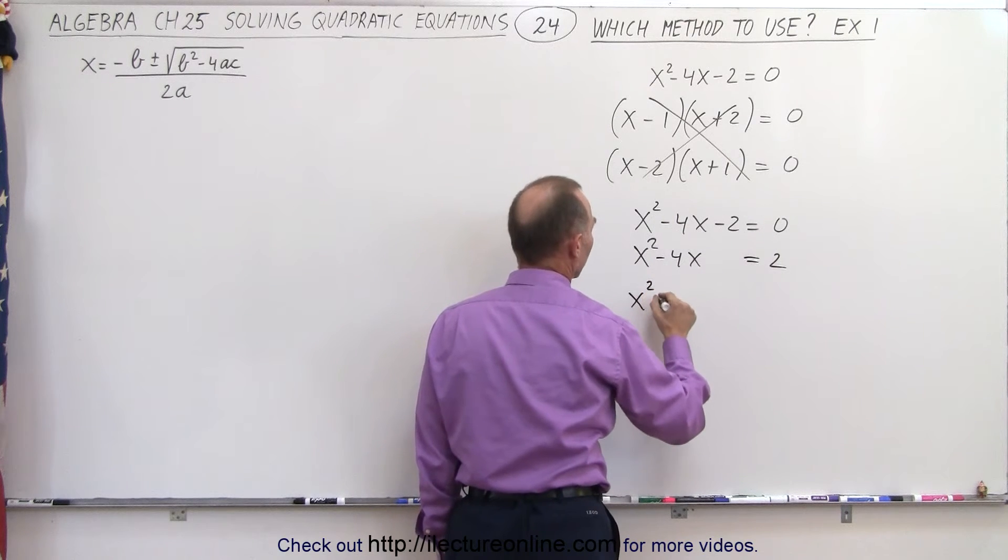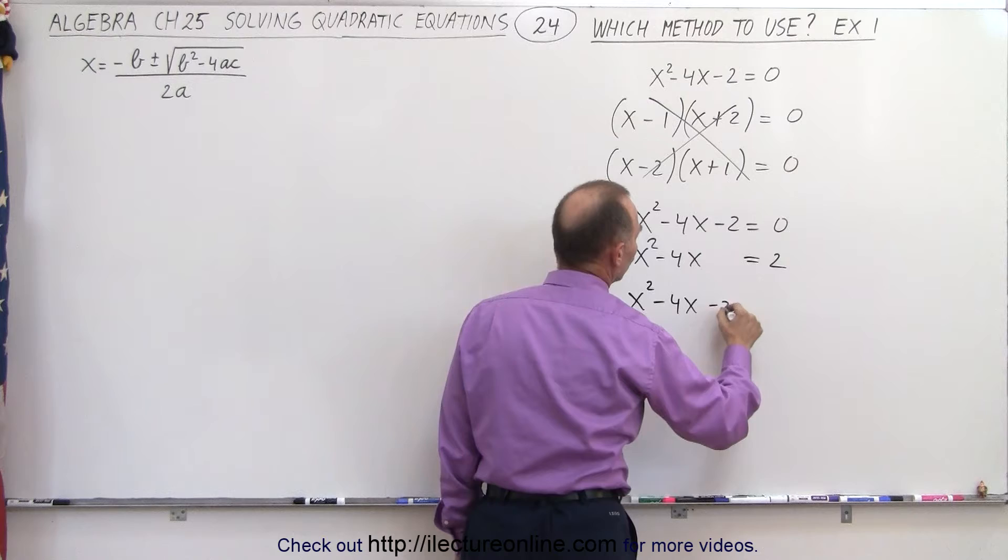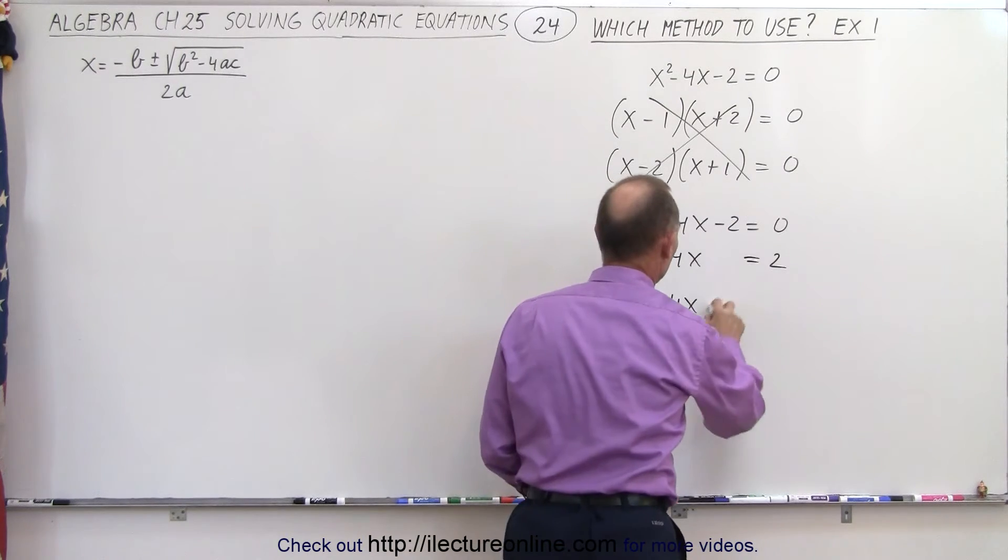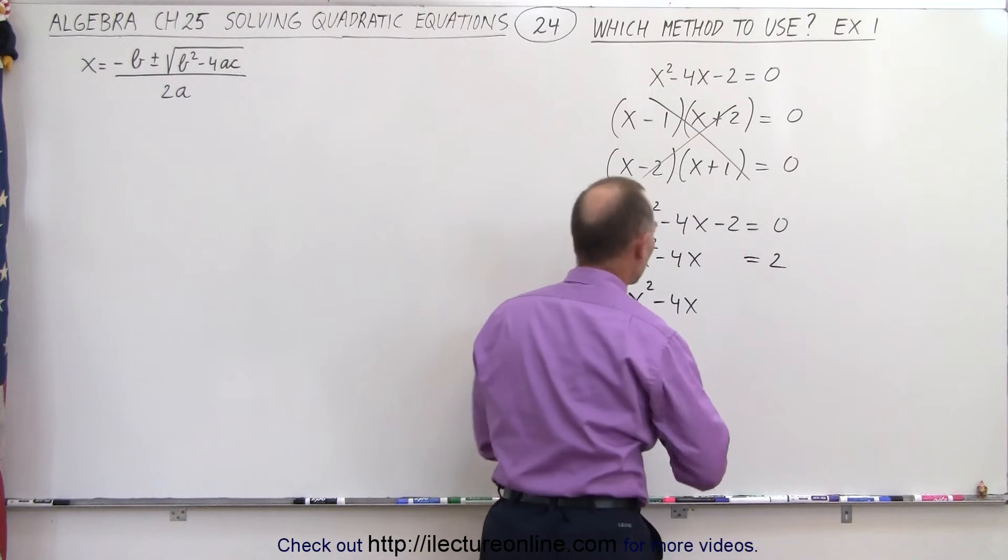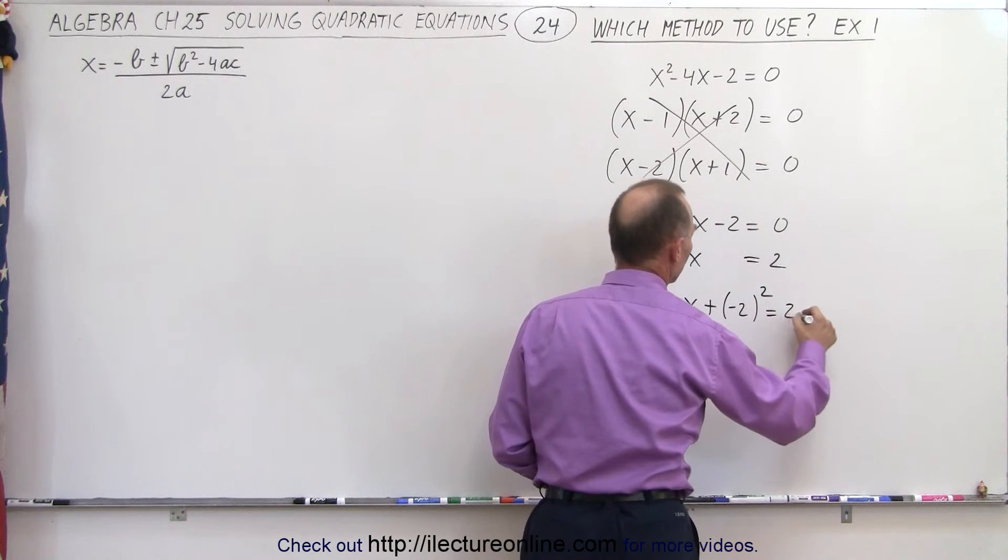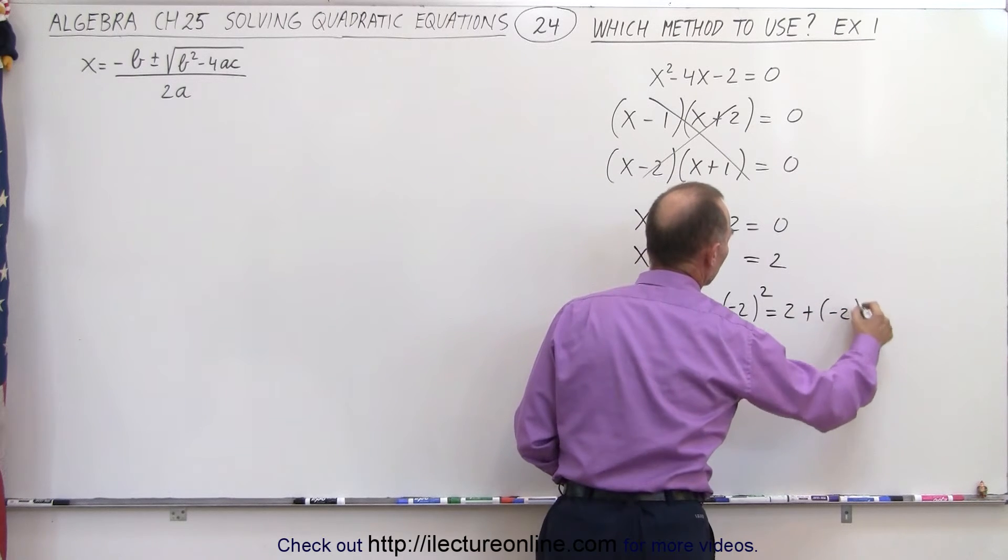So we have x squared minus four x. Well, actually, it'll be we're going to be adding it. So that will be plus a minus two squared equals two plus a minus two squared. I put in the negative sign even though we squared and disappears just so you can see that we're doing the right thing.